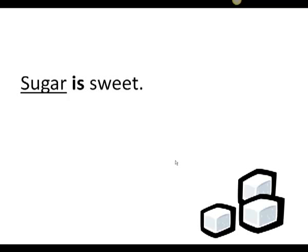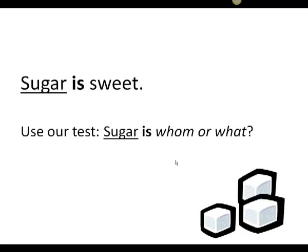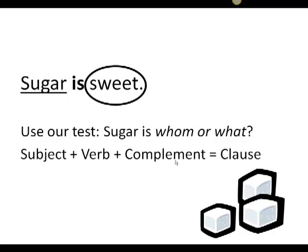The next sentence is a little easier. Here we have three words, sugar is sweet. Again, I've underlined the subject and bolded the verb. We use our test, sugar is whom or what? And we find the answer very easily. Sugar is sweet. Sweet is the complement. Subject, verb plus complement makes a clause.